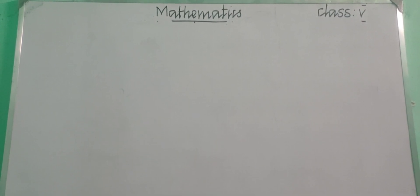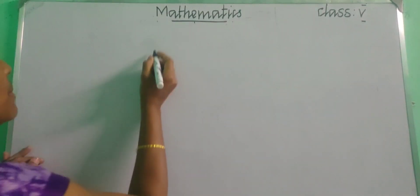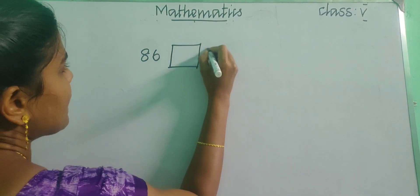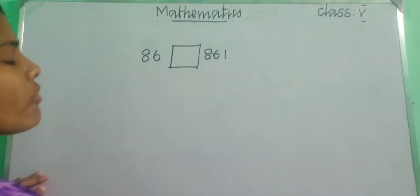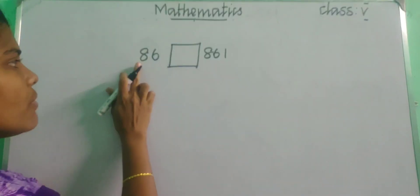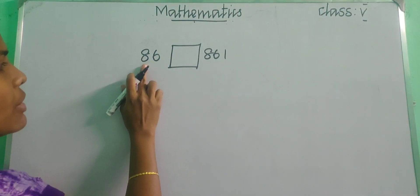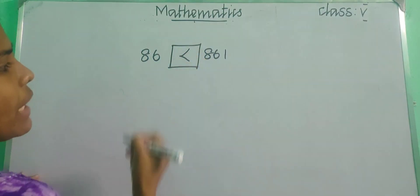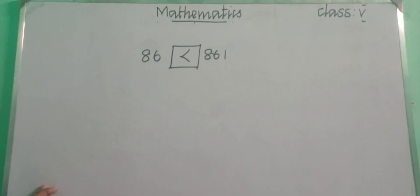Hello children, hope you all are safe and good. So in the previous class we have learnt about comparison of numbers and formation of new numbers. Comparison of numbers means how will you compare? Simply if you are having a number 86 and 861, so how will you compare? First of all we need to count the digits — here we are having 2 digits and here we are having 3 digits. So which one is greater? The 3-digit number is greater.